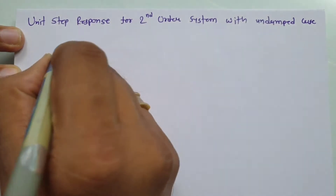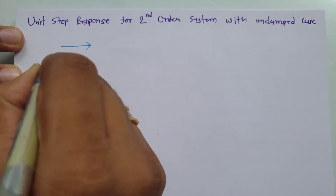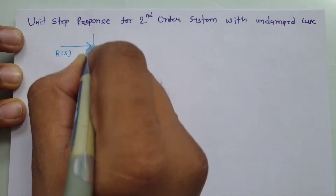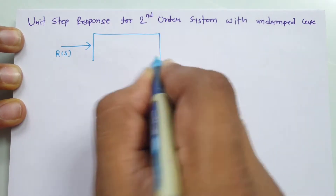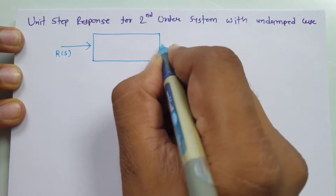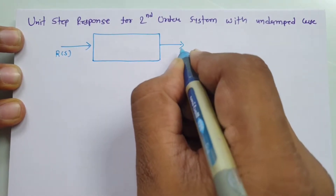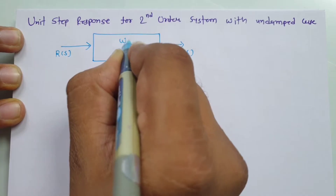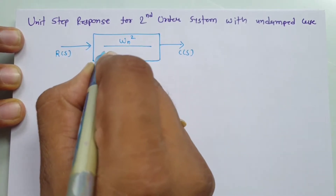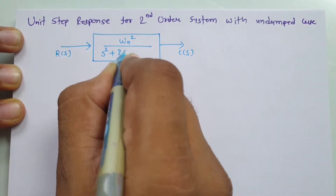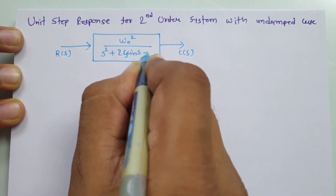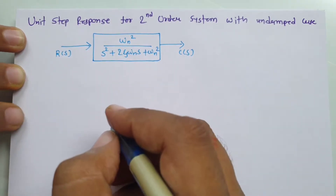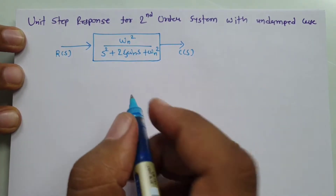Let me show you the second order system. Here my input is R(s), the second order system is shown here, and my output is C(s). The standard second order system transfer function is omega_n squared divided by s squared plus 2 zeta omega_n s plus omega_n squared. So that is how the system is set up.